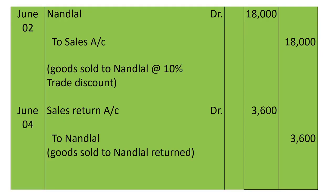Next entry: they sold goods to Nand Laal at a list price of 20,000 at a trade discount of 10%. So 10% of 20,000 is 2,000; we deduct 2,000 from 20,000 and do the entry with rupees 18,000. The entry will be: Nand Laal's account debited to Sales account 18,000. Narration: goods sold to Nand Laal at 10% trade discount.